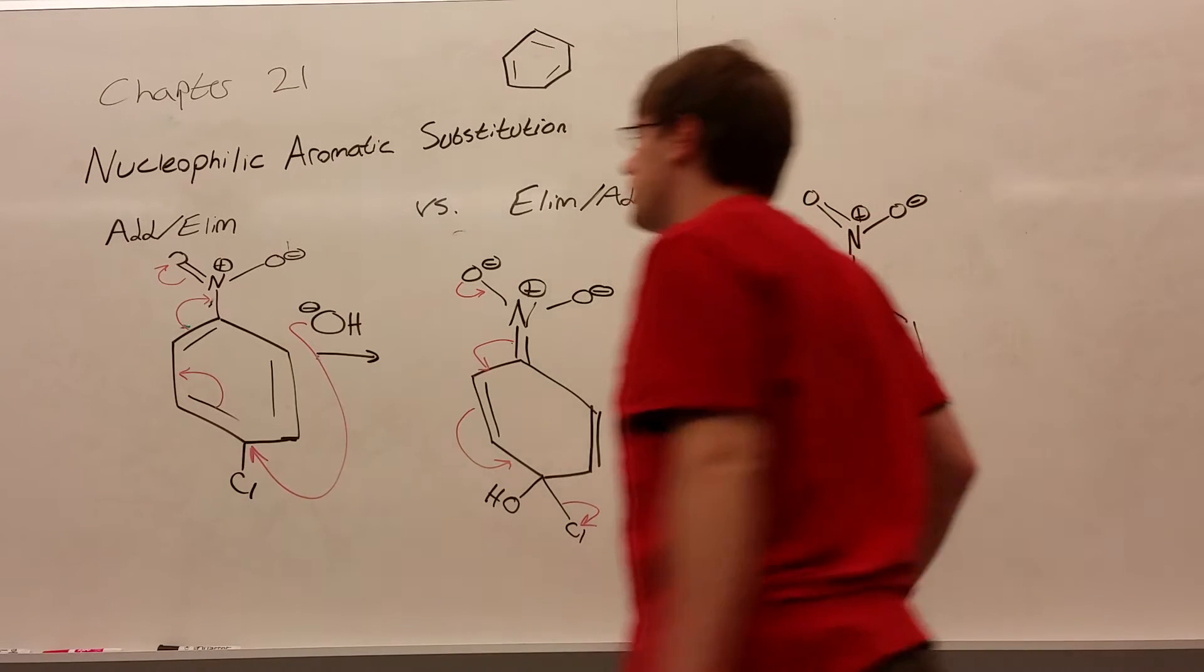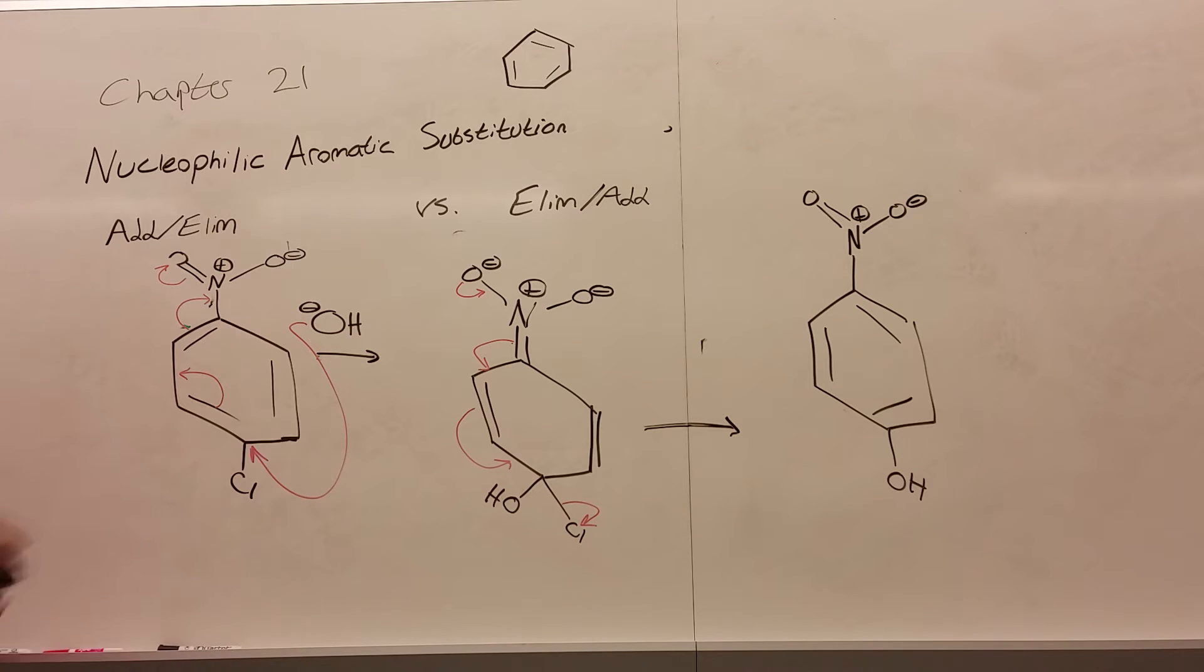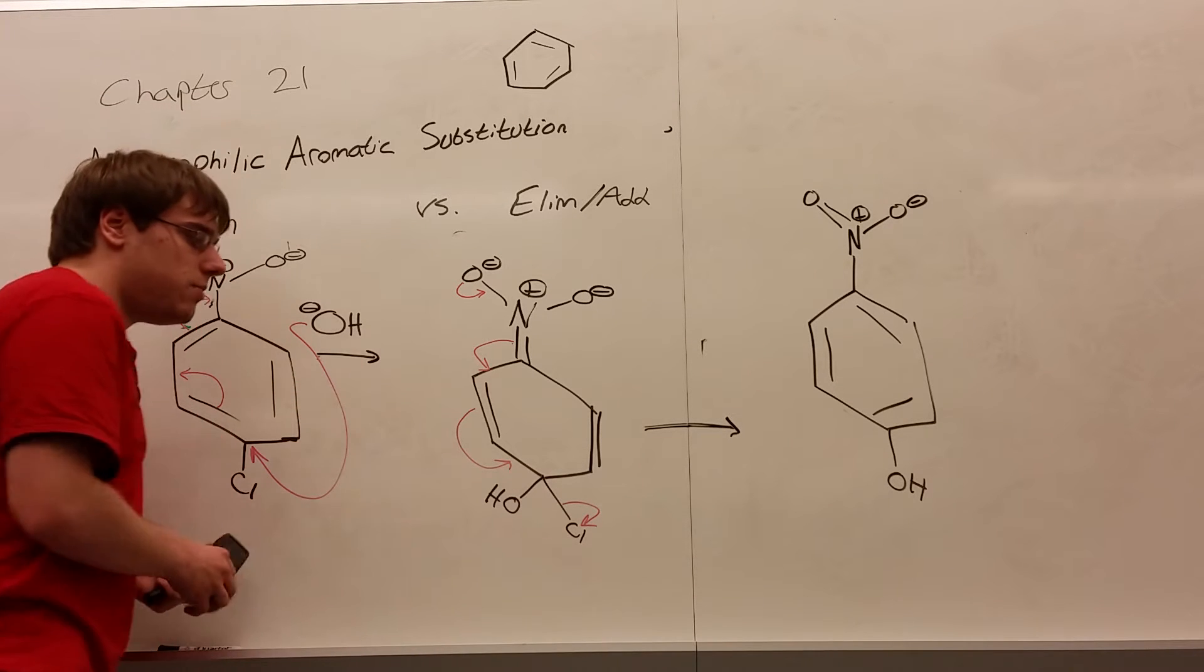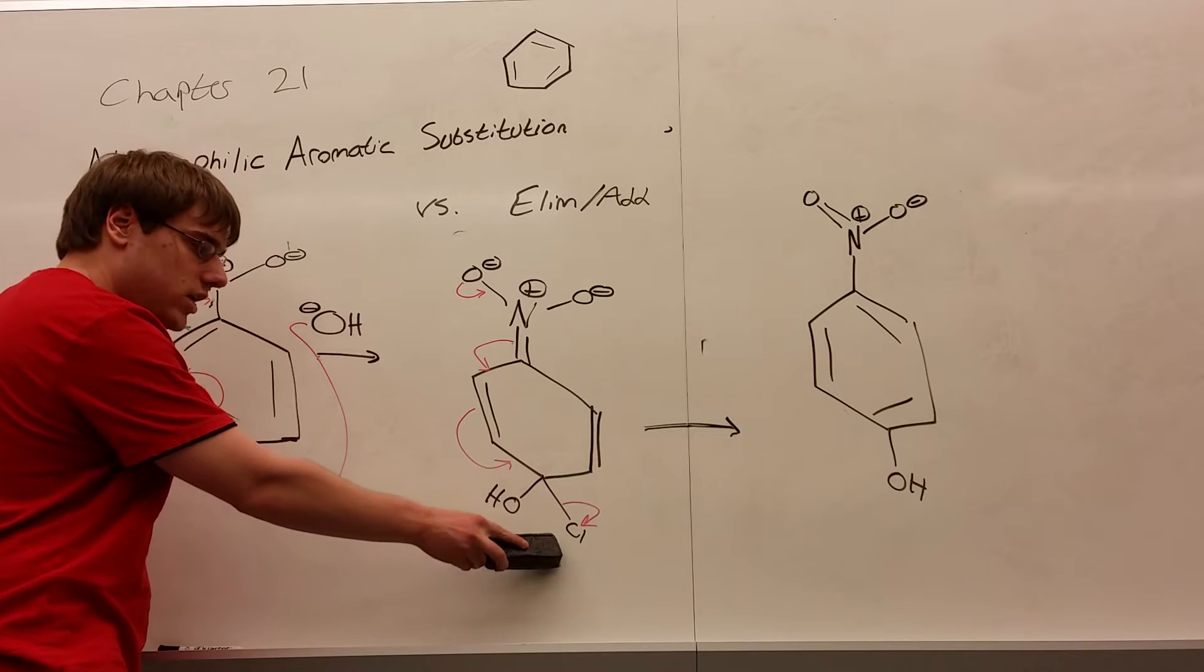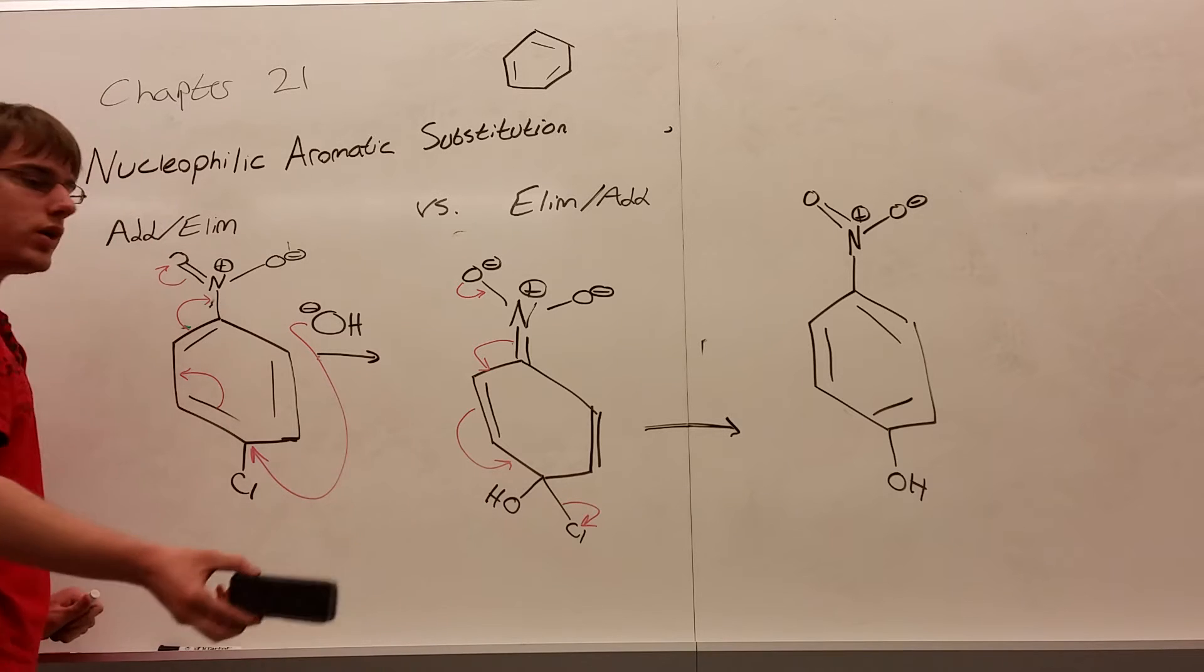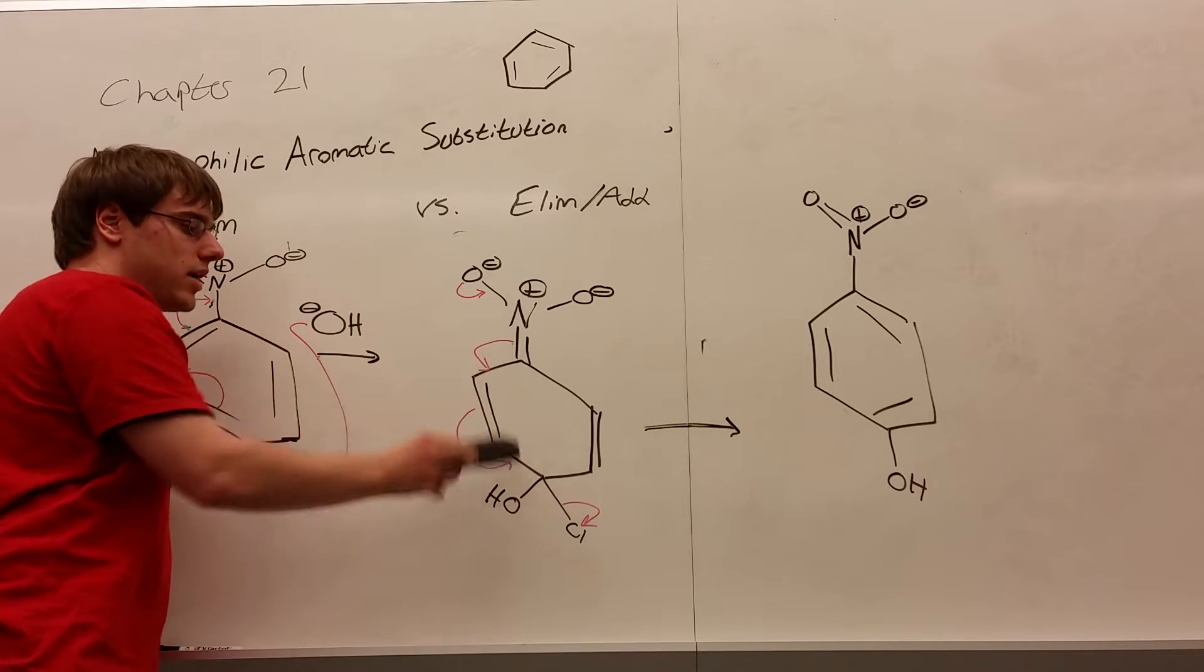Now that we've talked about addition-elimination, let's talk about elimination-addition. We said that the key thing that points out addition-elimination is your leaving group will always be ortho or para to a strong electron withdrawing group like NO2 or CF3. Then the nucleophile just ends up replacing that leaving group, keeping in mind you have this intermediate where the carbon has the nucleophile and leaving group shared until this can resonate back down and kick it out.